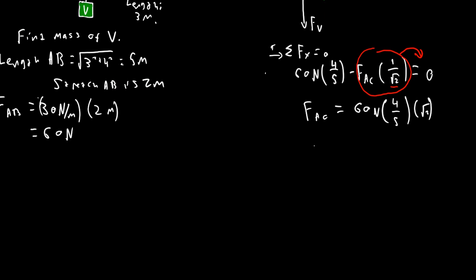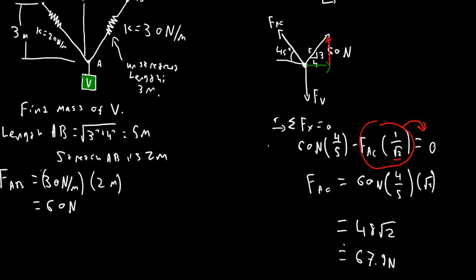So FAC equals that, which equals 48 root 2. Which is really just 60 times 4 divided by 5, we get 48, times root 2. And then if we want to be a little bit more approximate, we multiply by root 2 and we'll get 67.9 approximately. So that gives us our FAC. Very nice force.